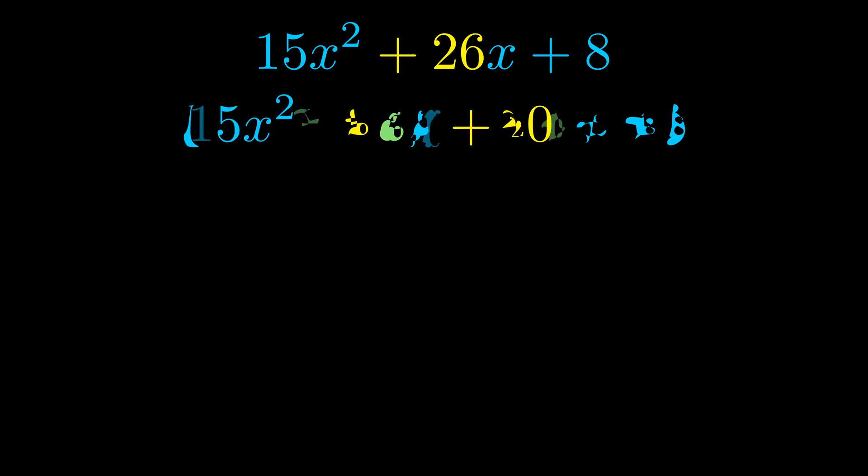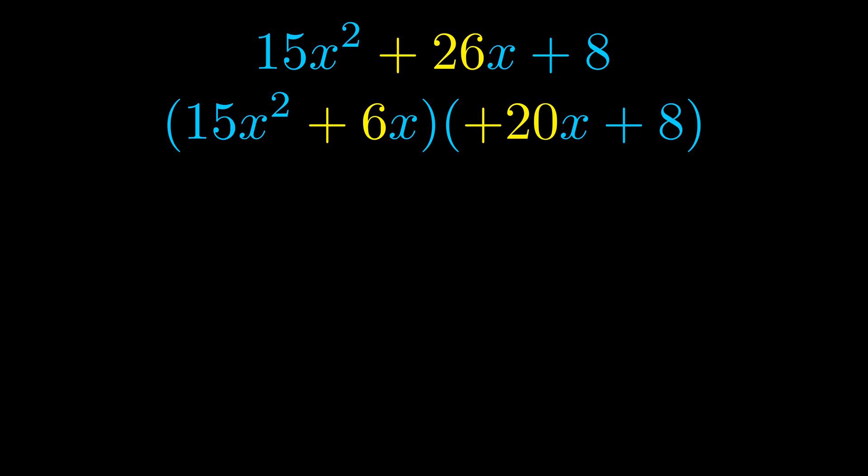Once we've done this we go ahead and we put parentheses around the first term and the last term. And we do that so that we can take the greatest common factor out of both terms. We can see the greatest common factor is now outside in green.